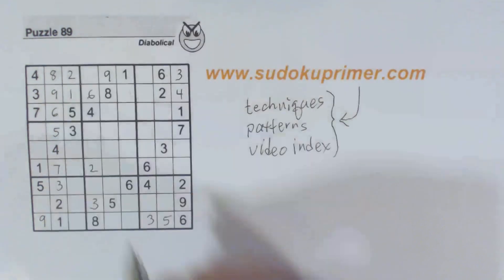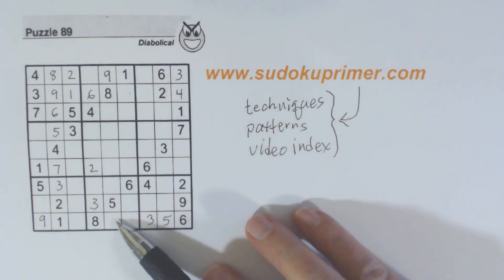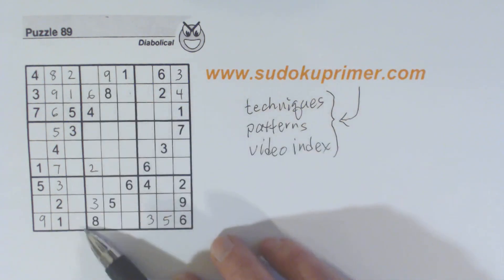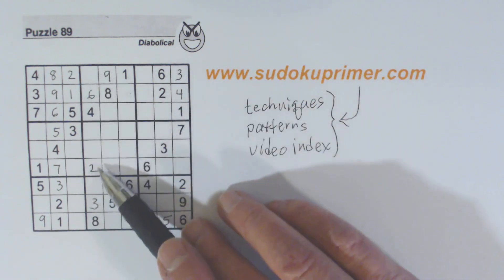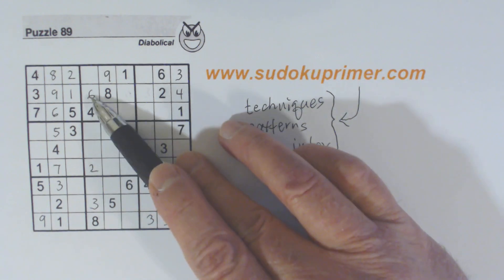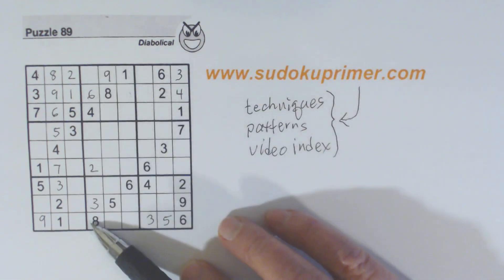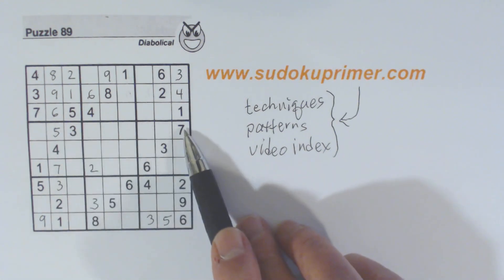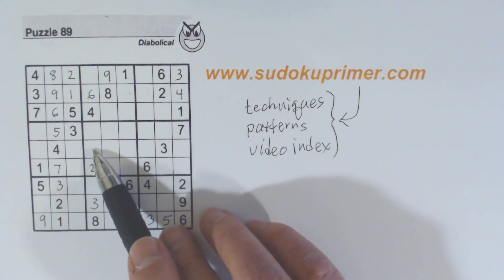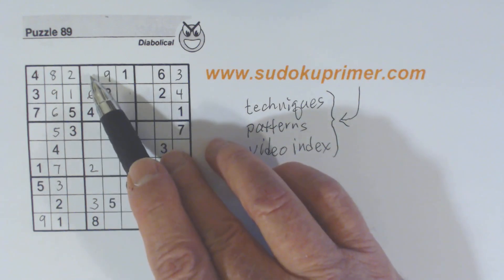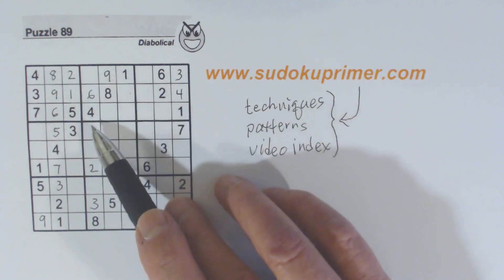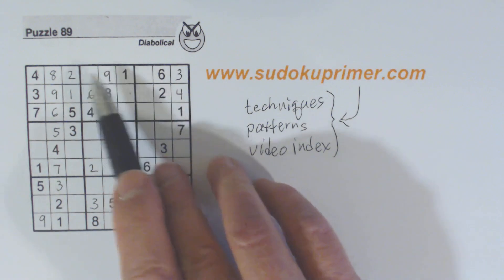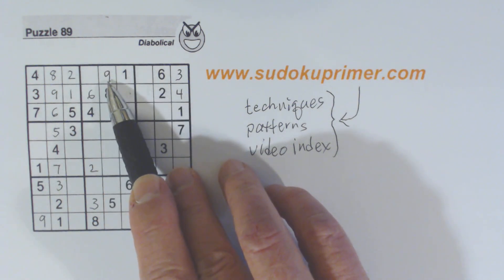Now this is a nine right there. How did we get that? Let's look at this column — we're missing one, five, seven, and nine. We know this is a one-nine because of the one-nine twins. And look here — we've got a five and a seven here, so we know that's a one-nine. So that has to be five and seven. This is already five and seven, so we have five-seven twins here. So that is the nine — that's how we got that nine.